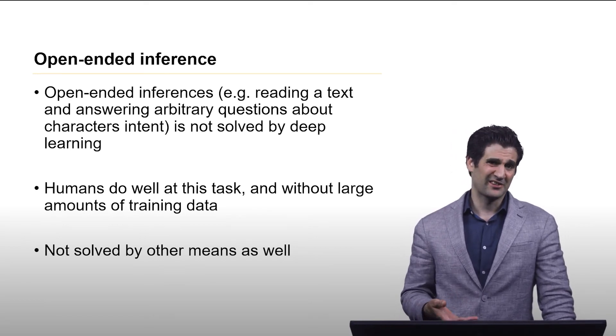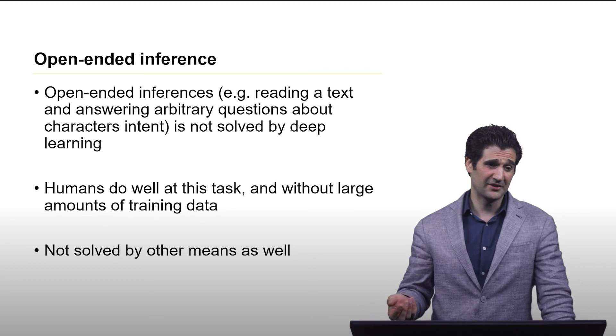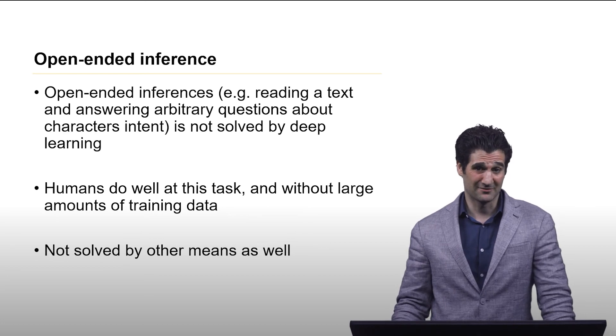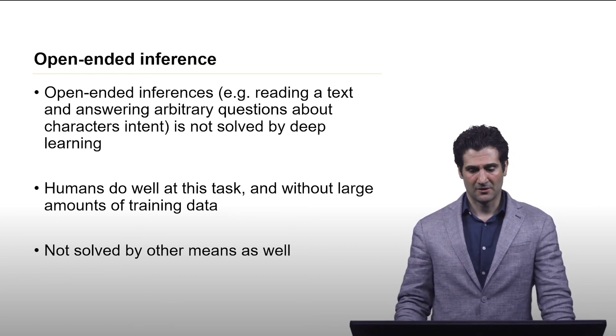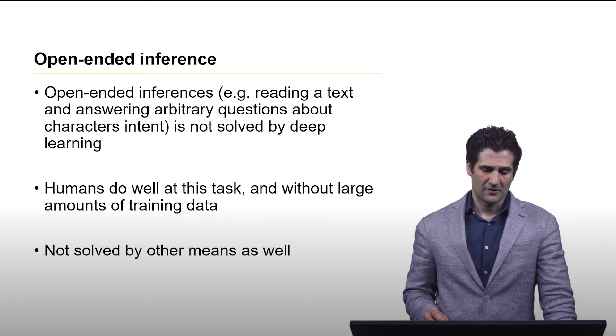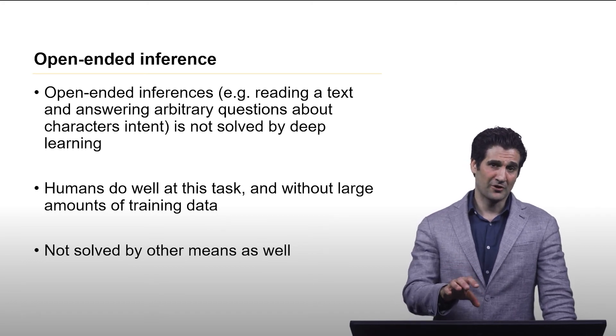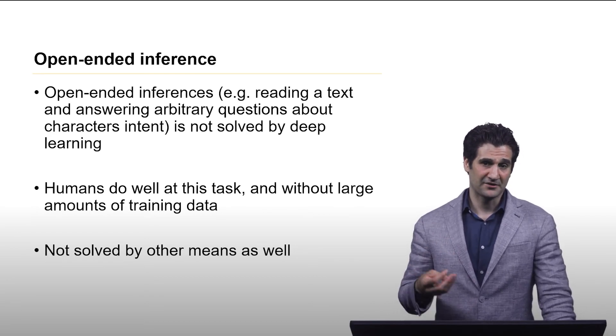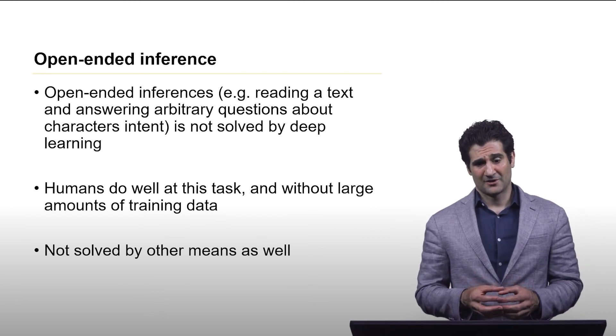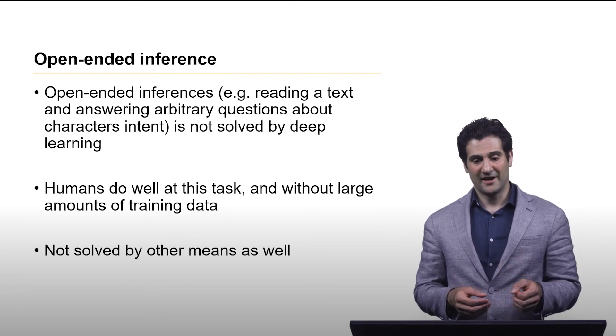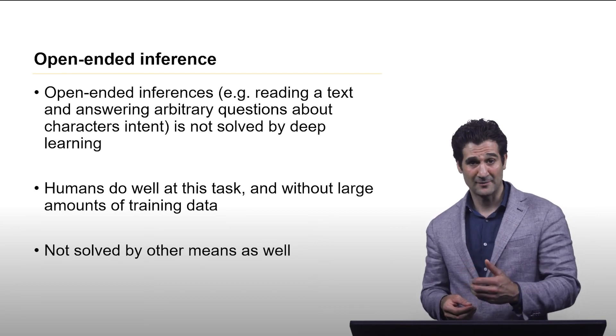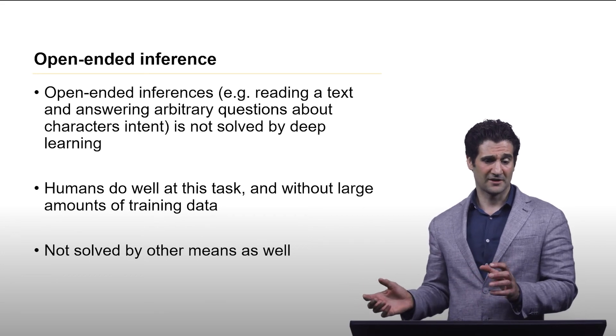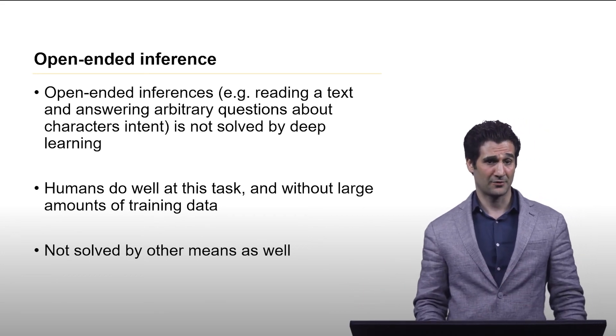But again, like some of the other things, open-ended inference is an area of artificial intelligence and machine learning that is really not adequately addressed by anything yet. But just bear in mind, I think one of the biggest ones with open-ended inferences where there's a lot of problems are these chat bots and things like that. They're very good at pattern matching kind of common questions and things like that. But then once you get outside of that or anything more sophisticated, they start falling apart pretty quick.